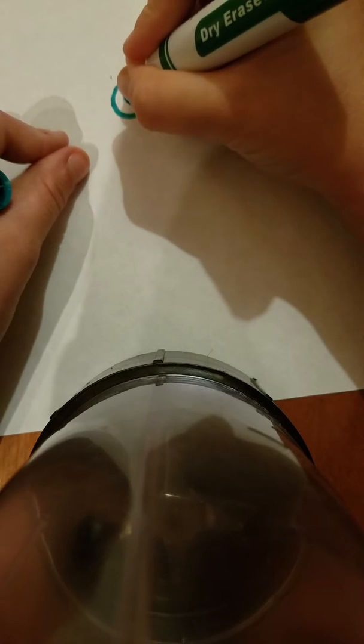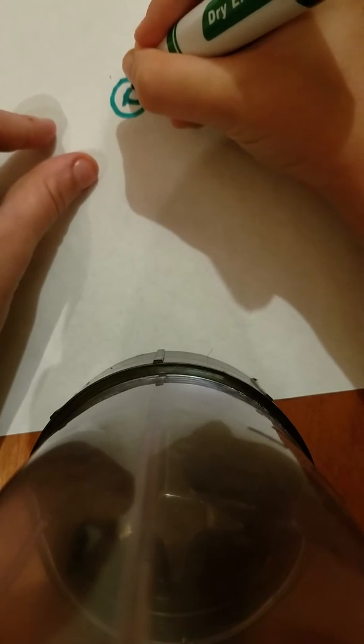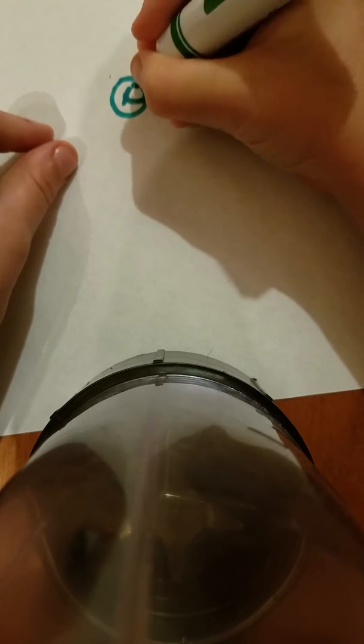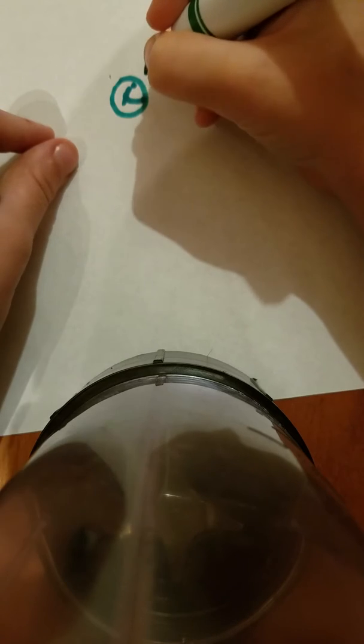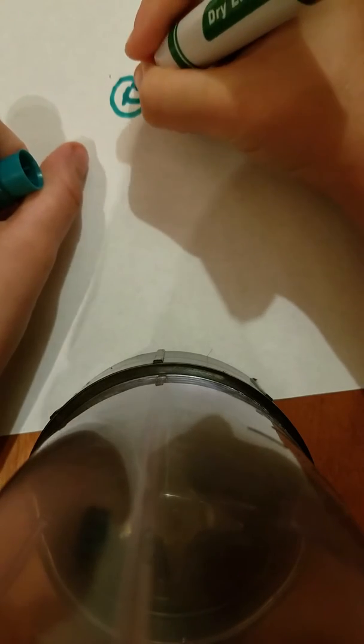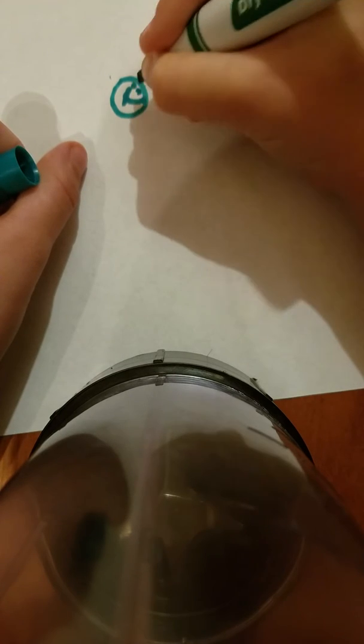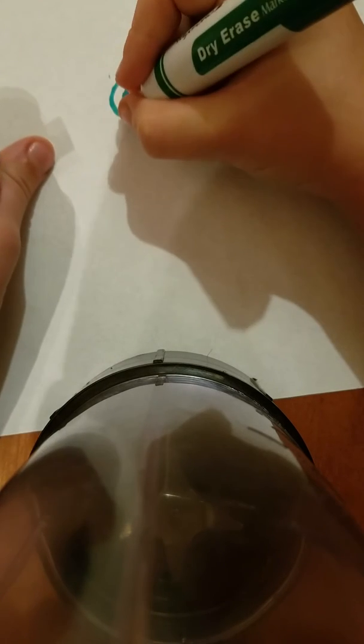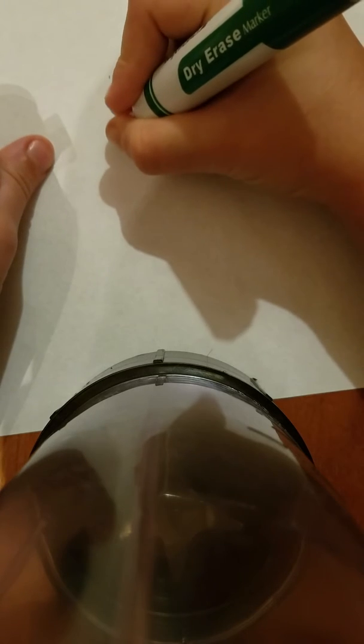So first we're going to start off with the head and then draw the little eye. If you want, you can draw a tiny C right underneath his eye like that and then you're going to do that with both.